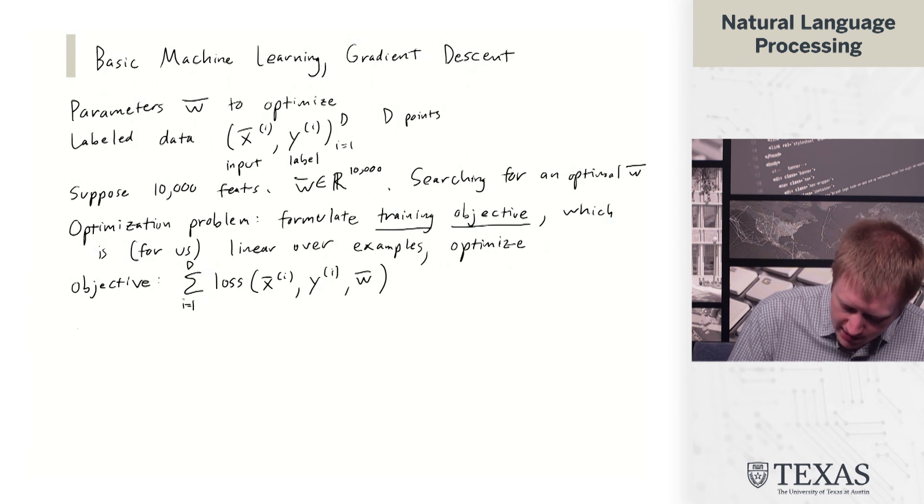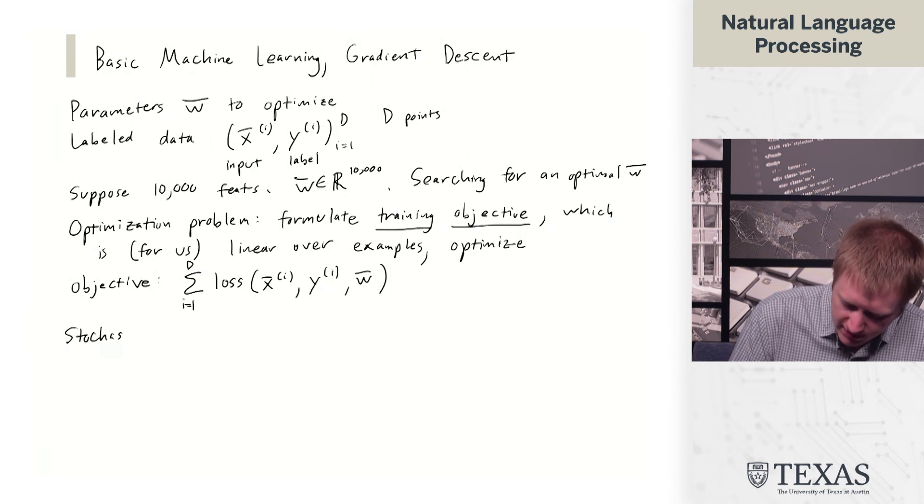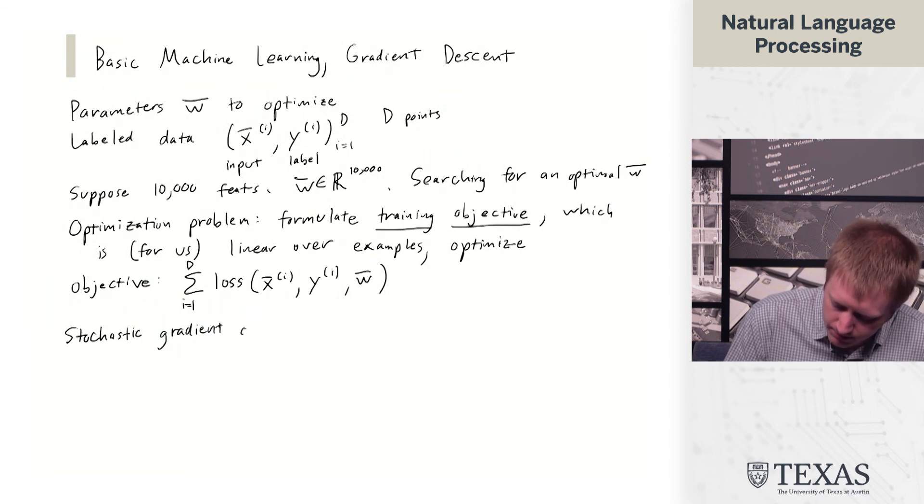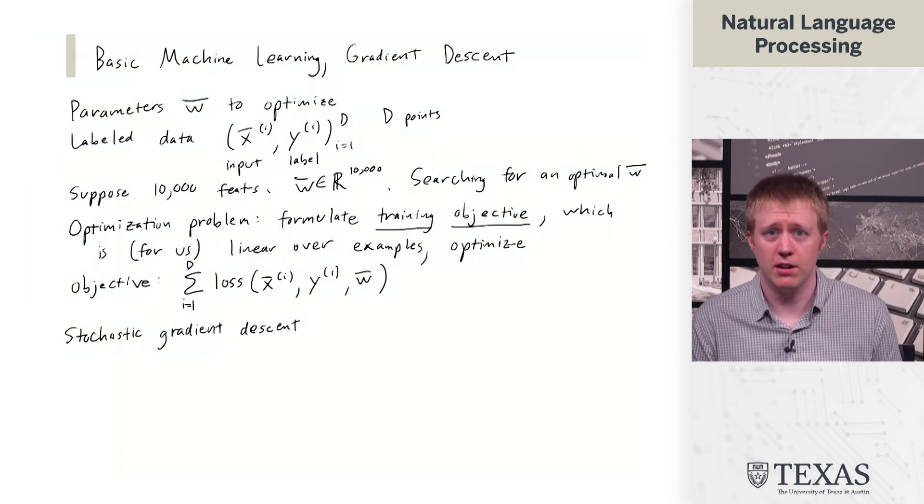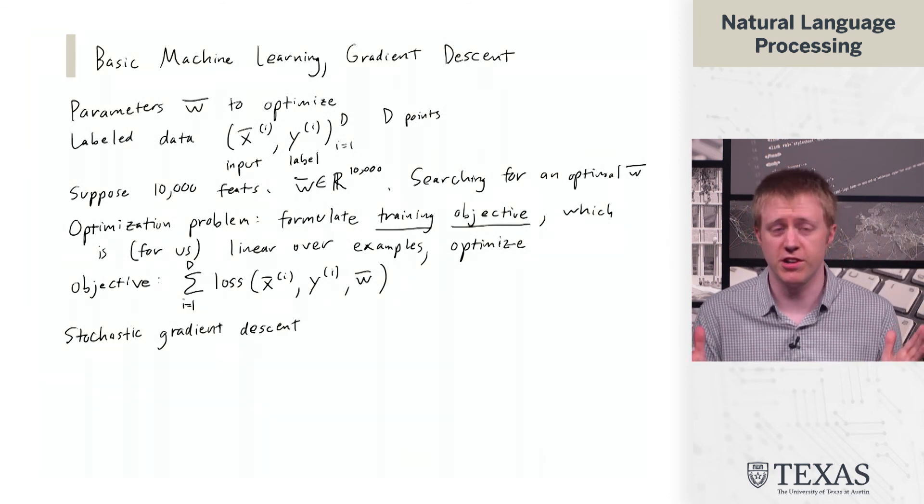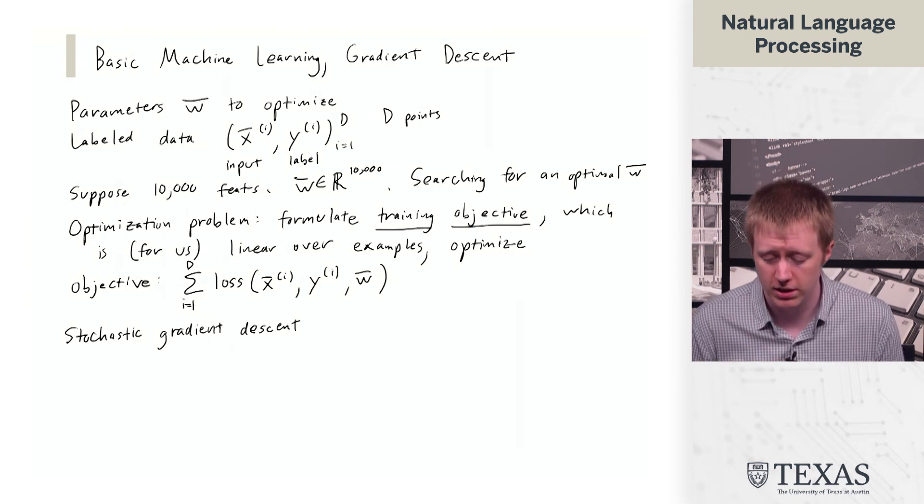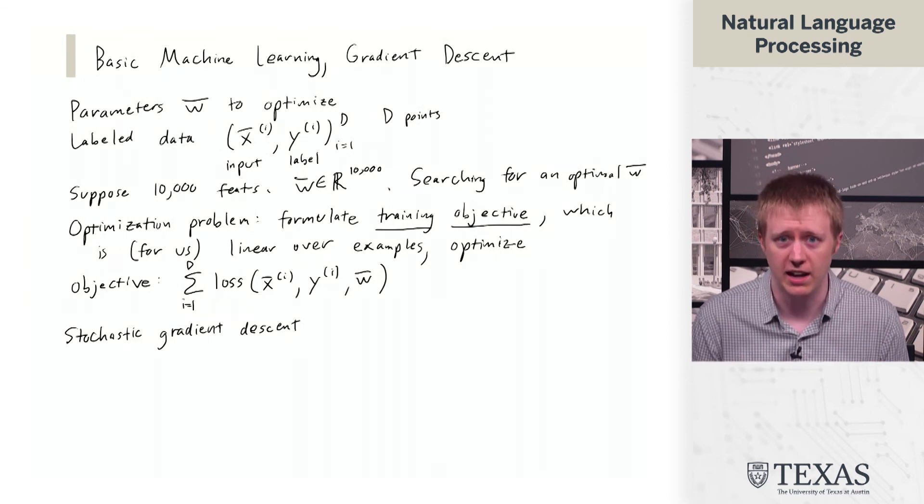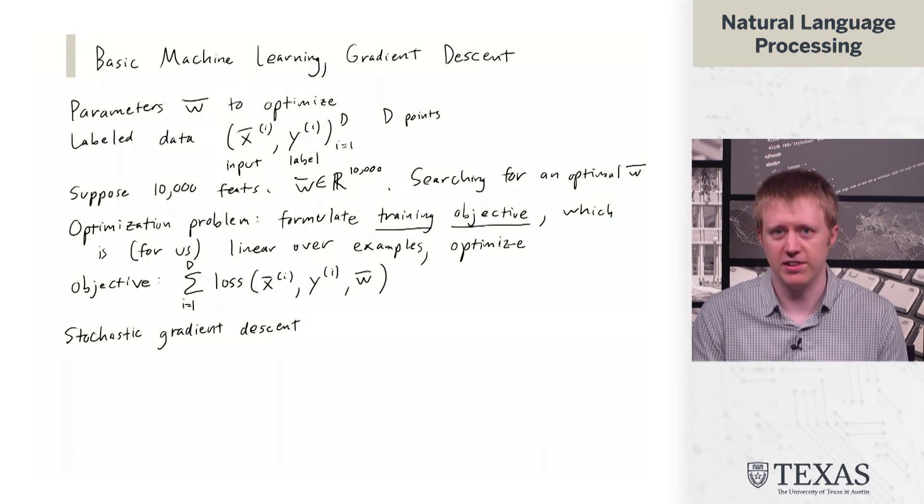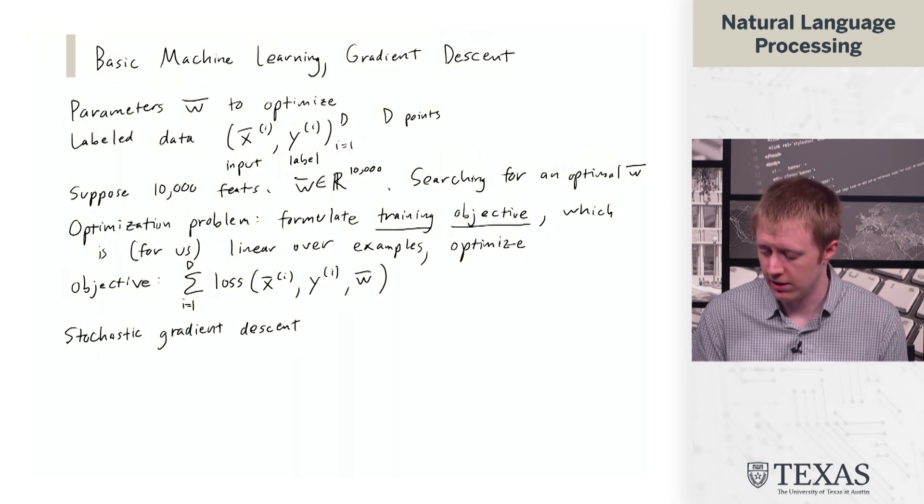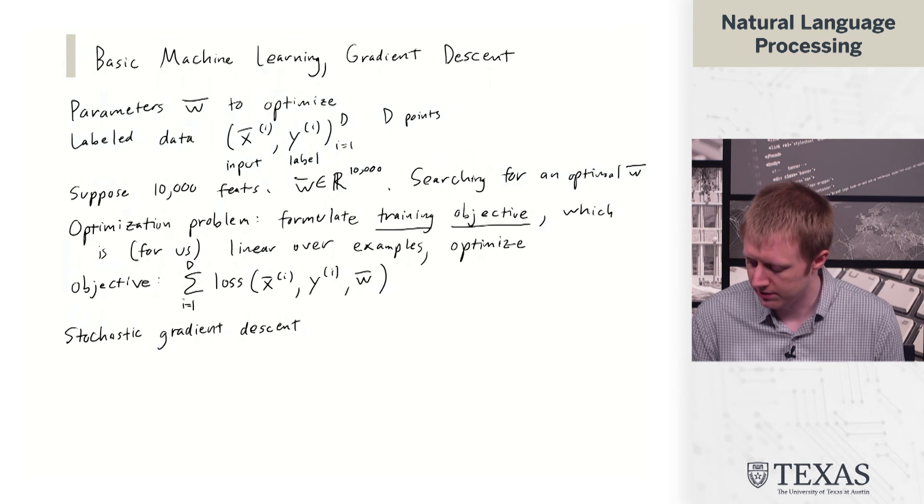And so this leads to the idea of stochastic gradient descent. And there's a whole space of algorithms here. I'm basically just presenting the general framework so that we have the basics of the machine learning and we can get on to the NLP stuff. But obviously, there's a rich set of techniques here in optimization that we can take advantage of.